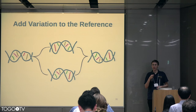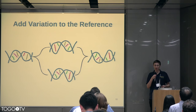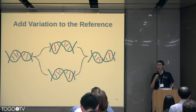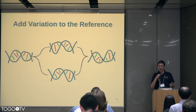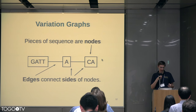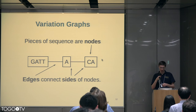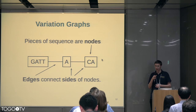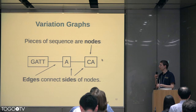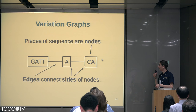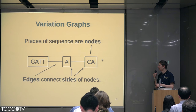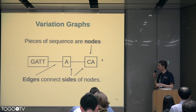The conclusion is we want to add variation to the reference — we want a reference that includes variation. Generally, we would do this by using a variation graph. The pieces of sequence are nodes, and these nodes are connected by edges that connect from one side of one node to another side of another node.